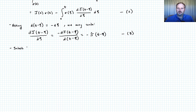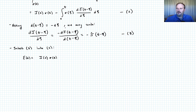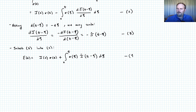Substituting Equation 3 into Equation 2, that gives us epsilon of t equal to J evaluated at time t equals 0, times sigma of t, plus — swapping the sign — the integral from 0 to t of sigma(xi) times J-dot(t minus xi), d xi. Let's call that Equation 4.